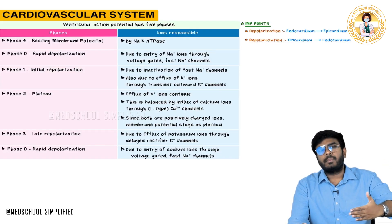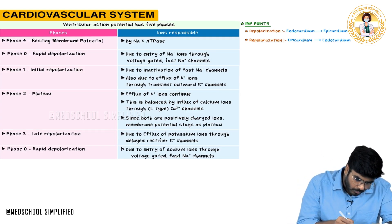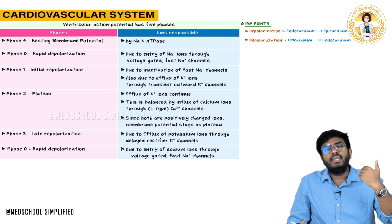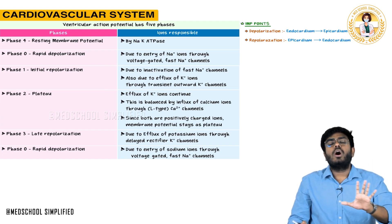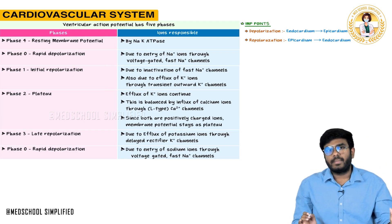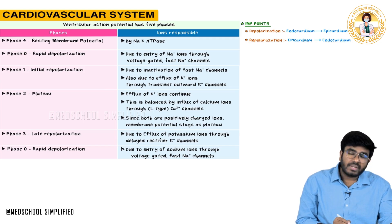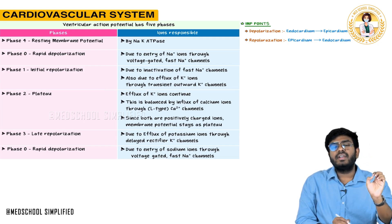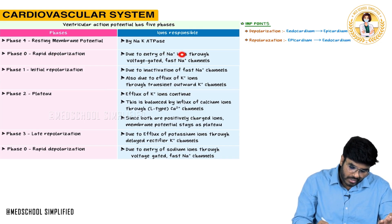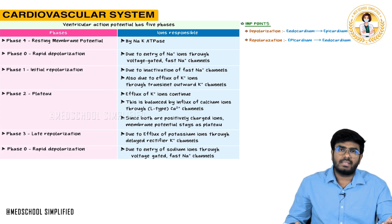Let's review once more. Phase 4 is the resting membrane potential — maintained because sodium-potassium ATPase and leaky potassium channels keep potassium going out, so the cell stays at minus 90 millivolts. Whenever an impulse comes from the SA node and strikes the ventricular myocytes, there is rapid depolarization due to influx of sodium ions through voltage-gated fast sodium channels.